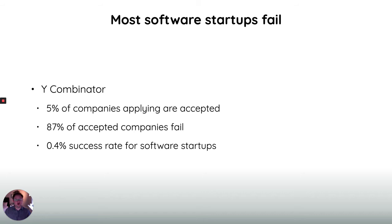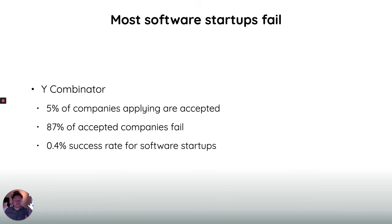Not just apps — software startups often fail as well. The startup scene is quite famous; you'll know from shows like Silicon Valley or from the Swedish media that there are successful startups, but most software startups are not successful. Y Combinator is one of the big funding organizations in the US. Only five percent of companies that apply are accepted and funded, and of those 87% fail — which means a success rate of less than one percent for software startups. It's really hard to make a software startup work.